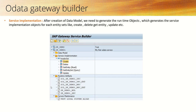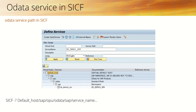Once we implement all the methods, we have to register the service into the SAP system. Once we register the service, in the transaction code SICF we can see that service. This is what I explained in a theoretical way — now I will log into the SAP system so you can see all this in the system.